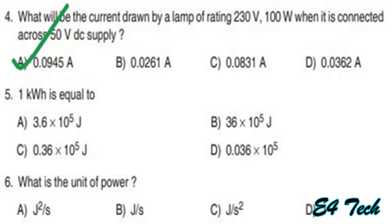1 watt is equal to 1 joule per second. 1 kilowatt hour is equal to 36 × 10⁵ joules, option B. The unit of power is the watt: 1 watt = 1 joule per second, option B.